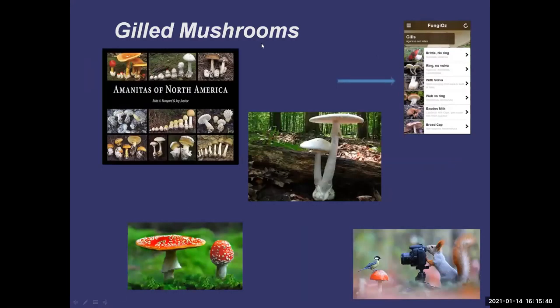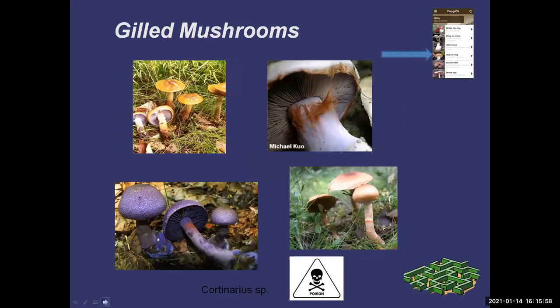This family is Amanitas, and I think they are very beautiful. There are a lot of them that are really poisonous and they're quite photogenic. This one here is a destroying angel. This one's the very famous Mario mushroom — the fly agaric.